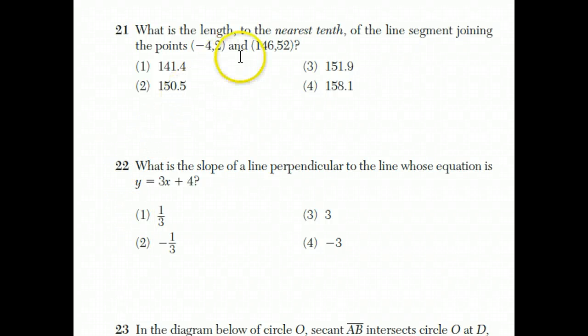Question 21 asks you to find the length to the nearest tenth of the line segment joining the points negative 4, 2 and 146, 52.